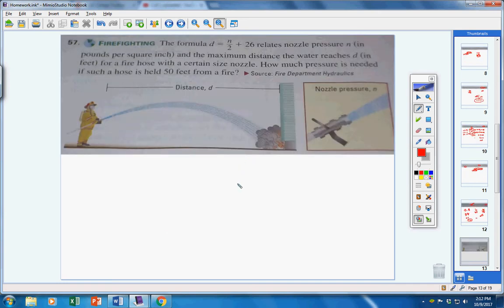Number 57. This formula here relates the nozzle pressure N to the distance the water reaches, D. I can put something in for D and solve for N. Or I can put a number in for N and solve for D. How much pressure is needed? Remember, N stands for the pressure. So, how much pressure is needed if I want the water to reach 50 feet? That's my distance. D is right here. I'm going to put a 50. And I'm simply going to say what does N my water pressure have to be. Put a 50 in for D and solve for N. If I want the water to go 50 feet, the water has to be at a certain pressure.